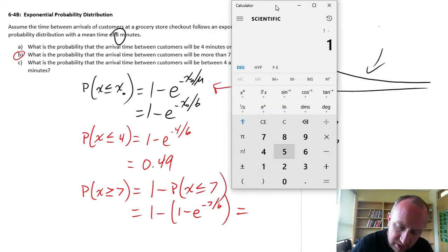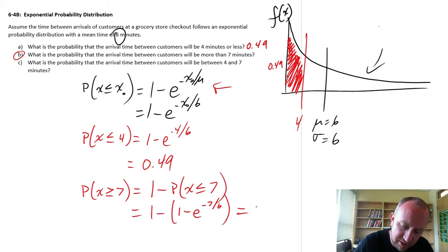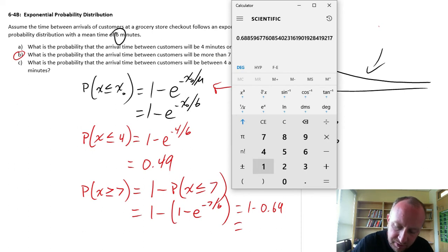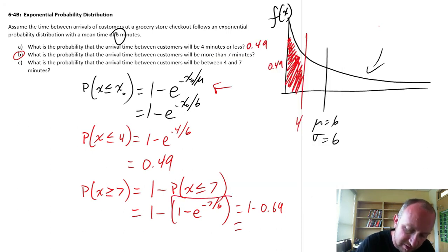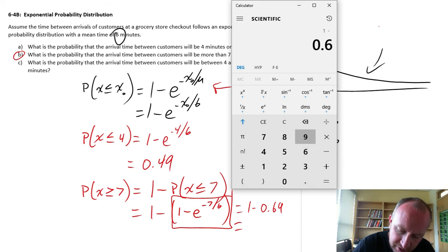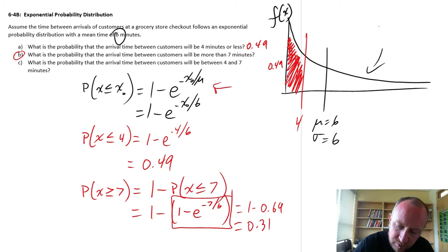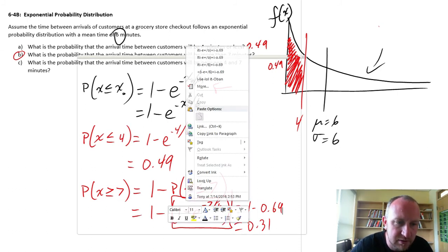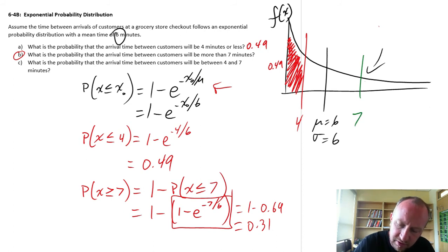So 1 minus, open brackets, negative 7 over 6 to the base e equals 0.69. So this is 1 minus 0.69, because all I calculated there was that first part. Now I want to subtract that from 1. 1 minus 0.69 is 0.31. So now I have here, 7 is my value of interest, and I have a value here of 0.31.